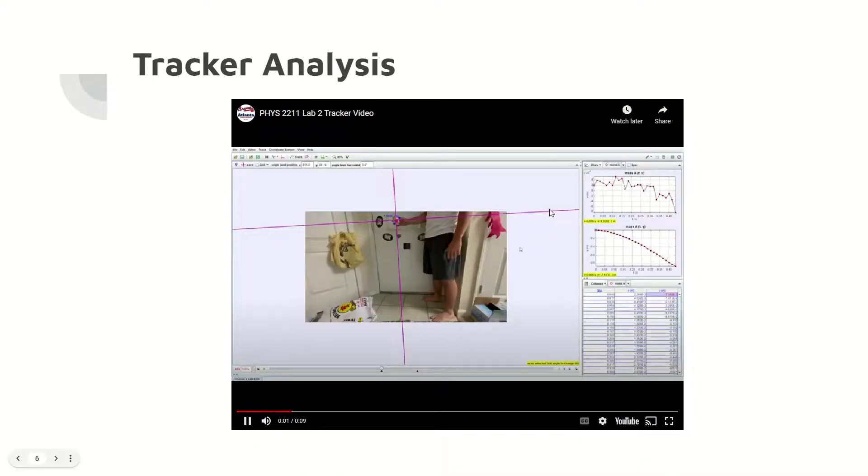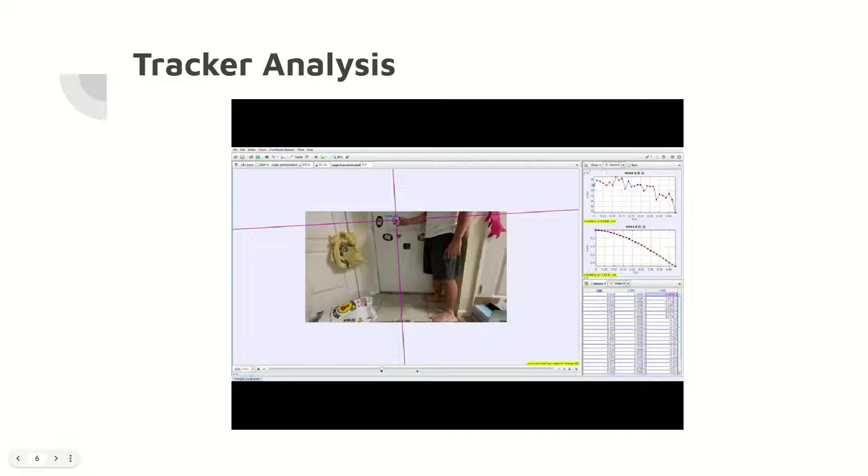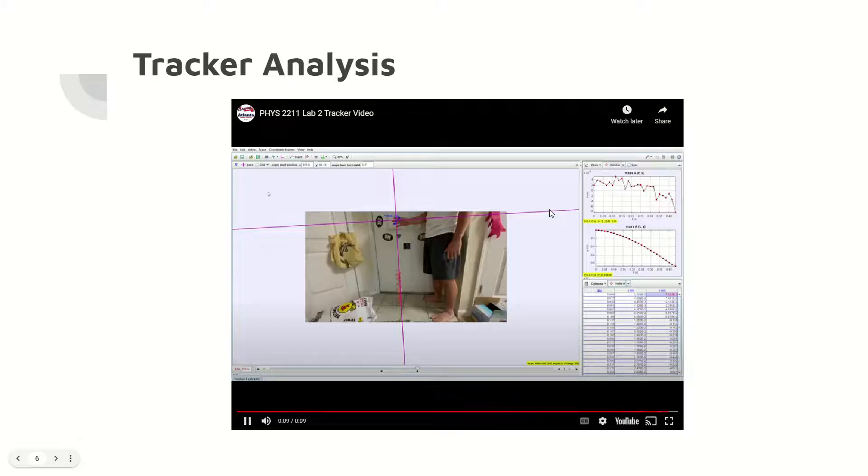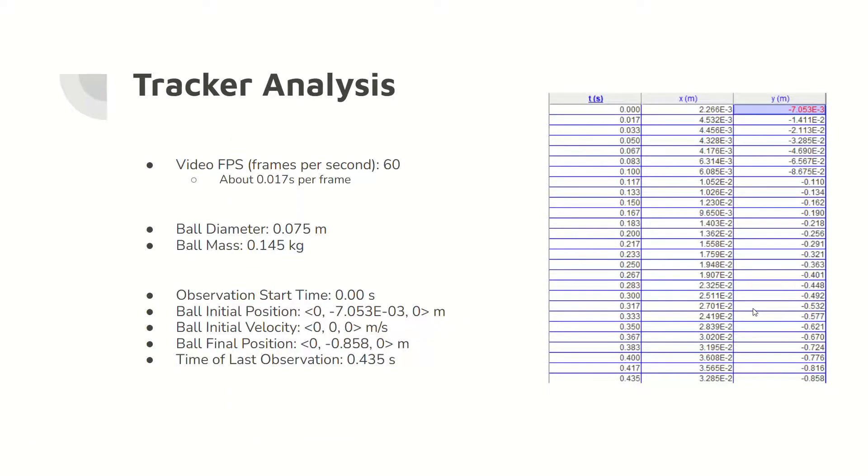Here is a video of the tracker analysis of the ball's motion. The origin of the axis is at the ball at time t equals 0 and the ball moves in the negative y direction. Here are some data from the tracker analysis. Importantly, each frame is 1/60th of a second, the ball travels roughly 0.858 meters, the initial velocity is 0, and the change in time is 0.435 seconds.